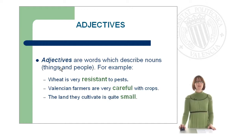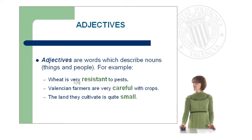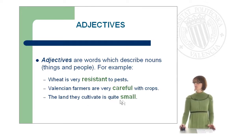Adjectives are words which normally describe nouns, things and people. Let's have a look at the examples on the screen. Wheat is very resistant to pests. Valencian farmers are very careful with crops. The land they cultivate is quite small.